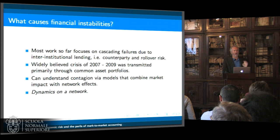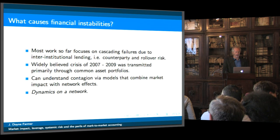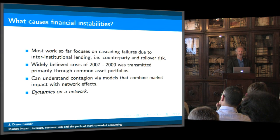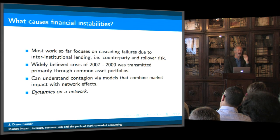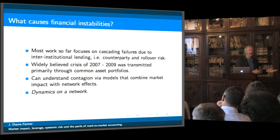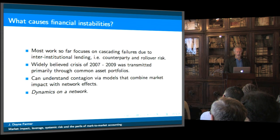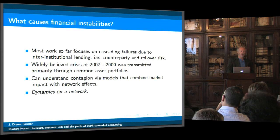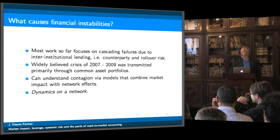Now I want to talk about a generalization of this idea. What I did there was a single-asset portfolio. I now want to talk about multi-asset portfolios, which is a more realistic case and more relevant to the notion of contagion. Most work so far on financial contagion in the network community has focused on cascading failures due to institutional lending — that is, counterparty and rollover risk. But central bankers generally believe that the main vector of contagion in the crisis was actually the fact that financial institutions had overlapping portfolios and they were leveraged. Those two things combined together badly.